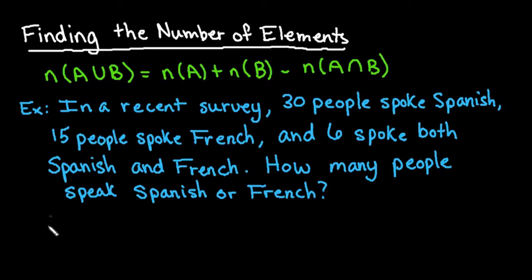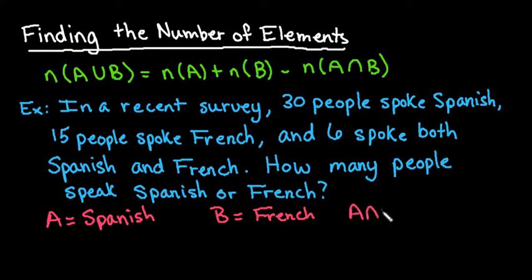What we're going to do is let set A be the number that speaks Spanish. We're going to let B be the number that speak French, and then remember that A and B is those that speak both.